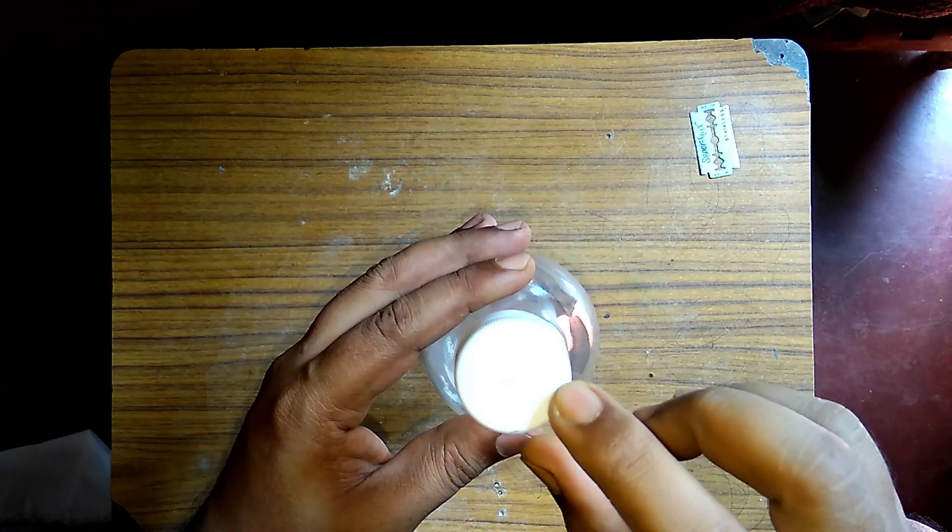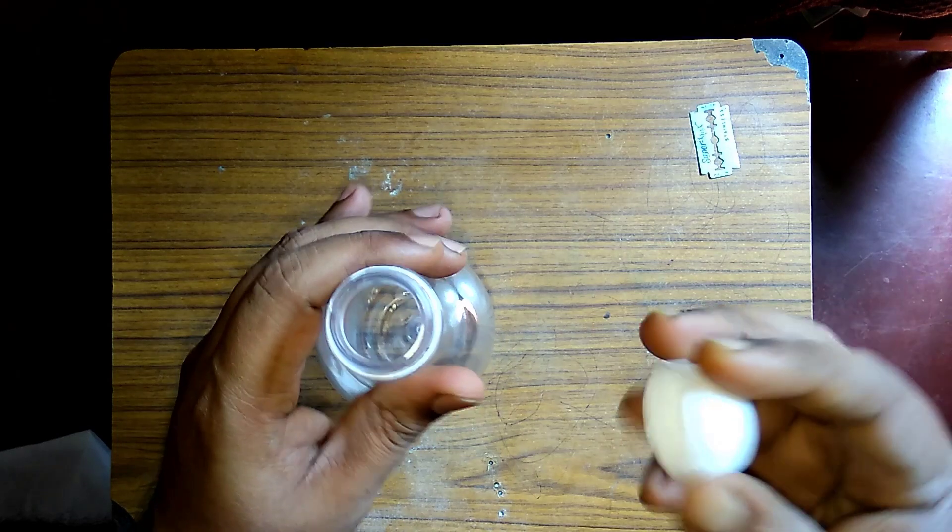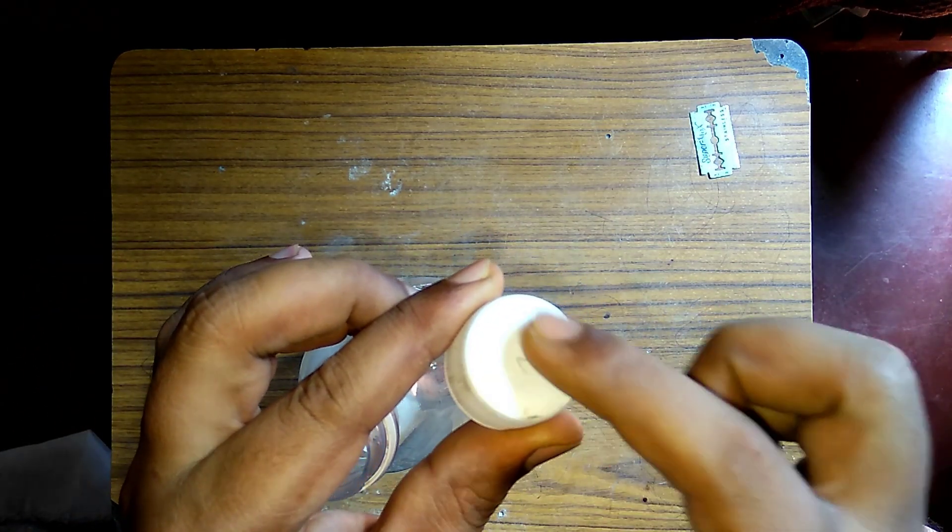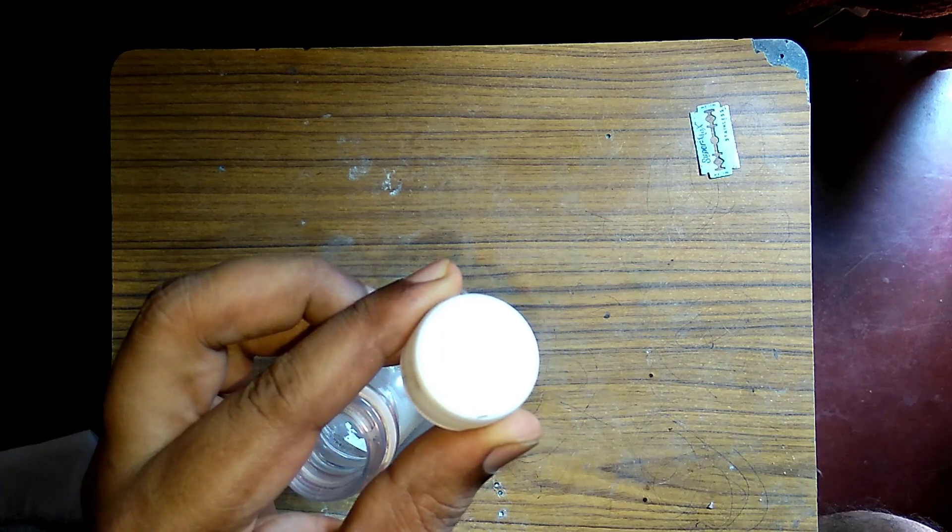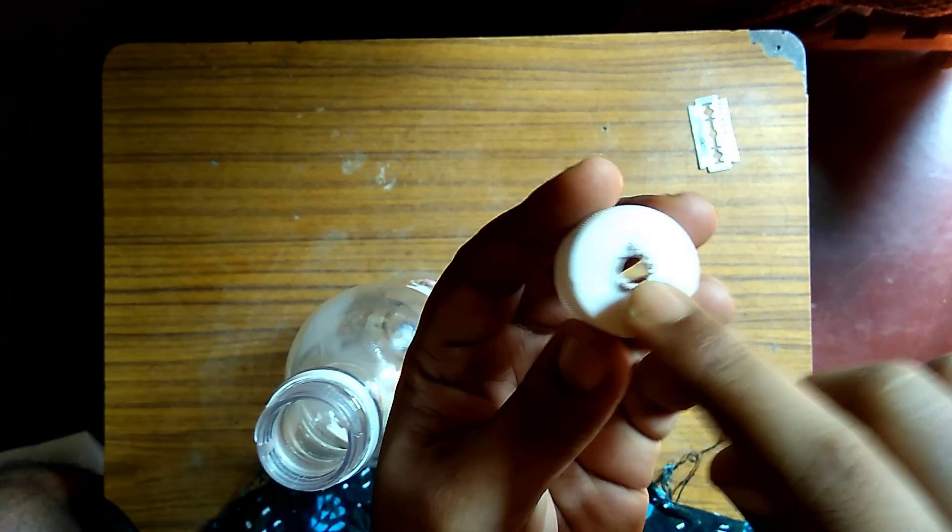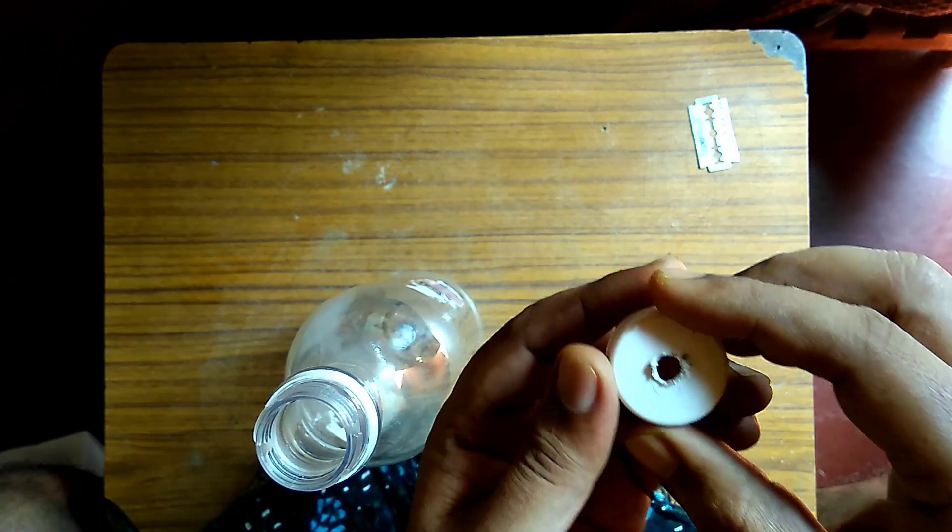Okay, get a one liter bottle. Next we need to put a hole on the cap. What I did is just burned a screwdriver and pierced into the cap. The hole is approximately 5mm in diameter. Carbon dioxide and water is coming out through this hole.